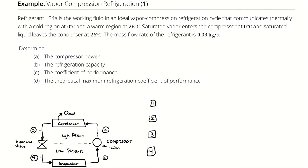The device communicates thermally — meaning it exchanges heat — with a cold region at 0 degrees Celsius and a warm region at 26 degrees Celsius. That gives approximate operating temperatures for the condenser and evaporator. Saturated vapor enters the compressor at 0 degrees Celsius, meaning state 1 has a quality of 1 and a temperature of 0 degrees Celsius.